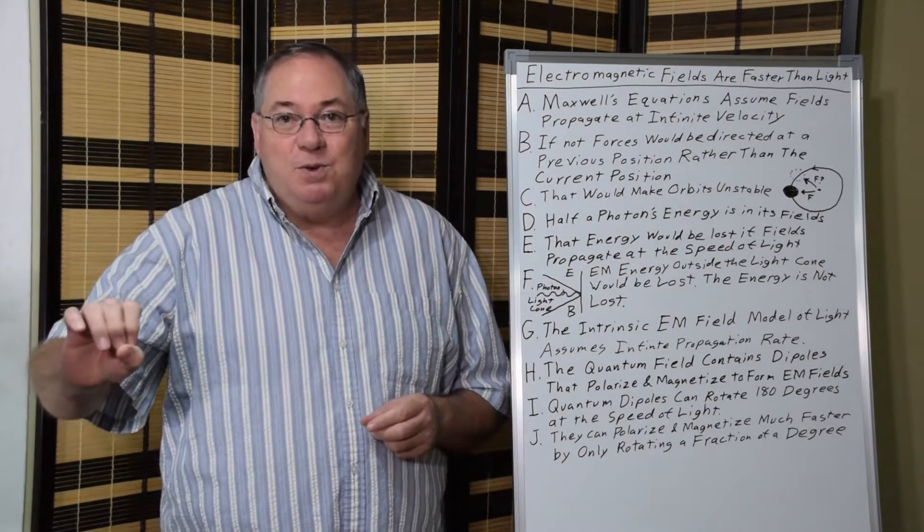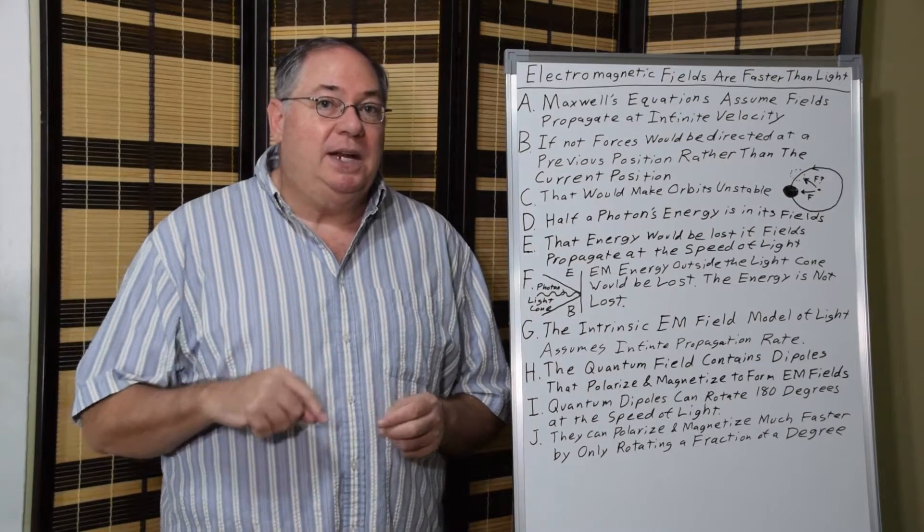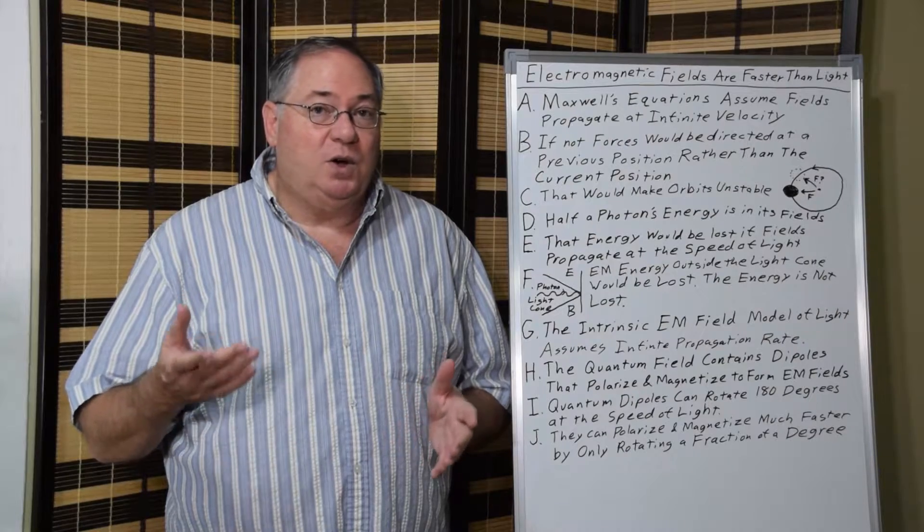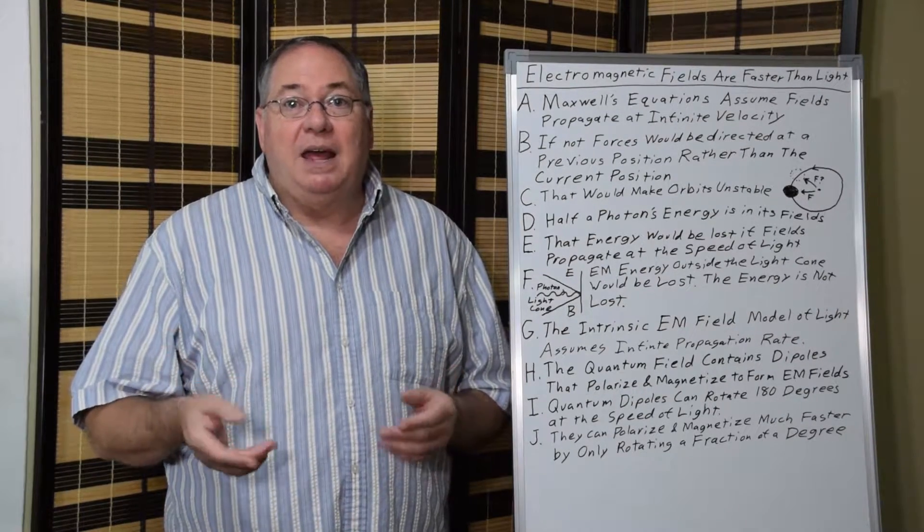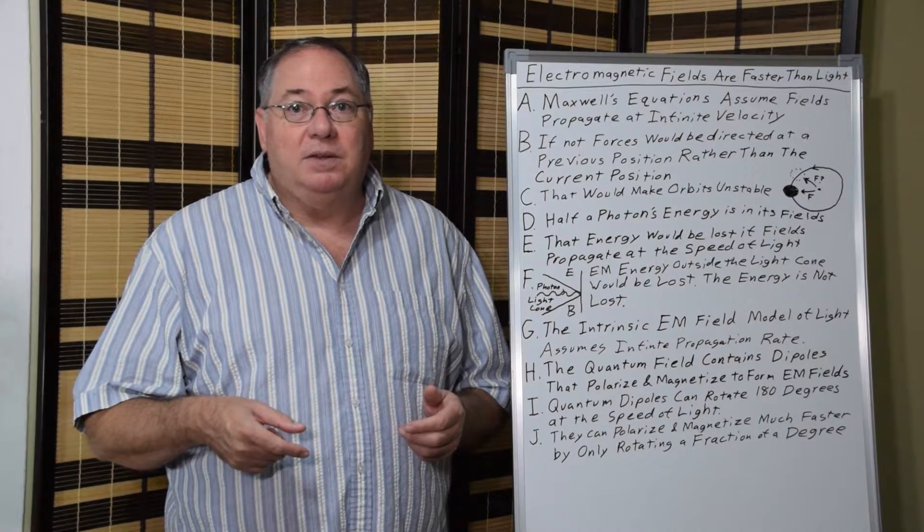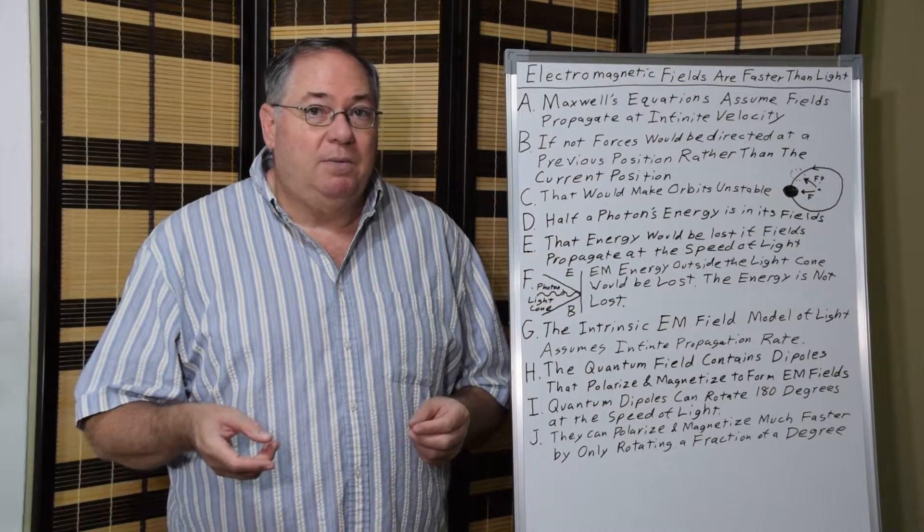We wouldn't see propagation of electric and magnetic fields beyond the actual immediate region of the central dipole. We'd just have a narrow tube of fields. But instead, we have electric and magnetic fields that, as far as we know, propagate toward infinity. We don't have a limit to how far electric and magnetic fields can propagate from photons.